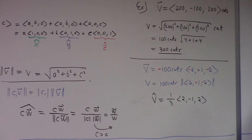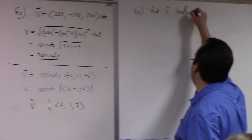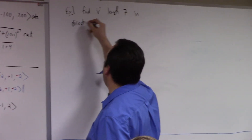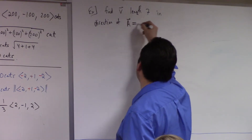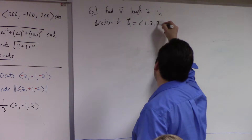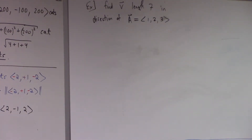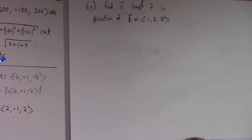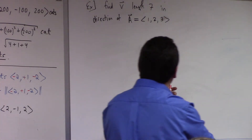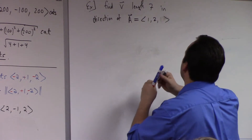One more example. Find vector V with length 7 in the direction of vector A, which is (1, 2, 3). I'm not putting units on, because that's beside the point. So, how do you do this? Here's the solution I think of. Maybe A is this direction. But what I want is a vector of length 7 in that direction. Maybe A has length 3, just for discussion's sake — if I change a 3 to a 2. Okay, now it has length 3.